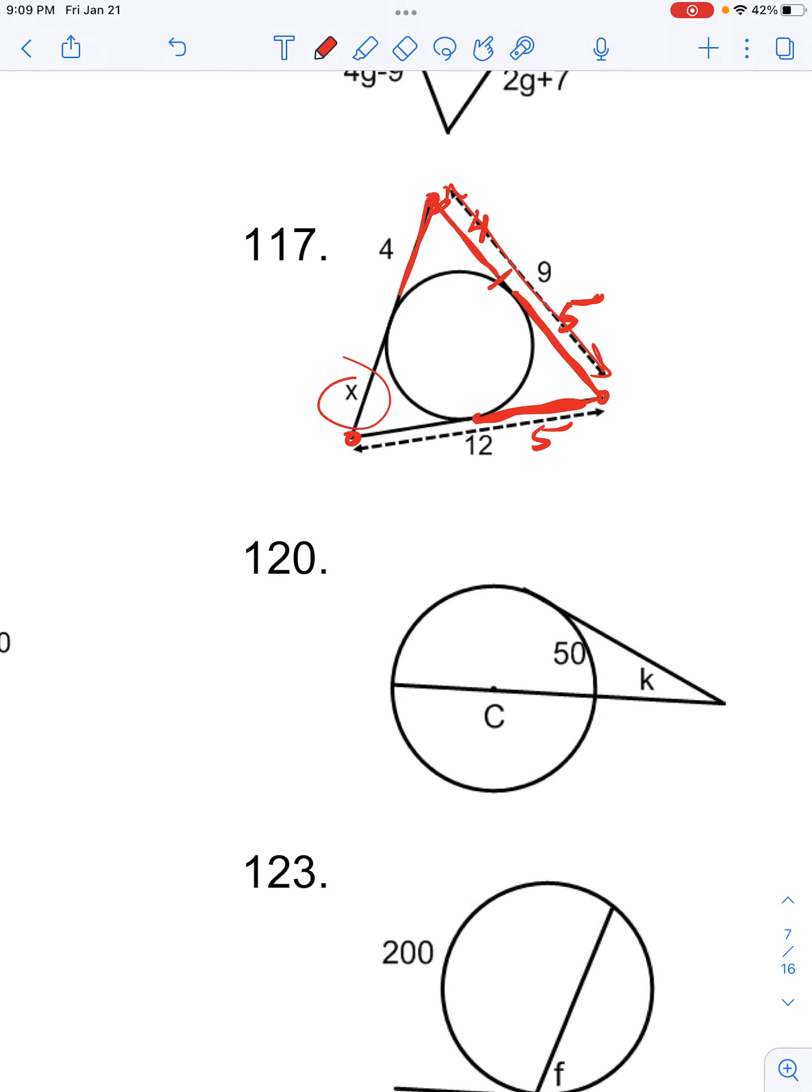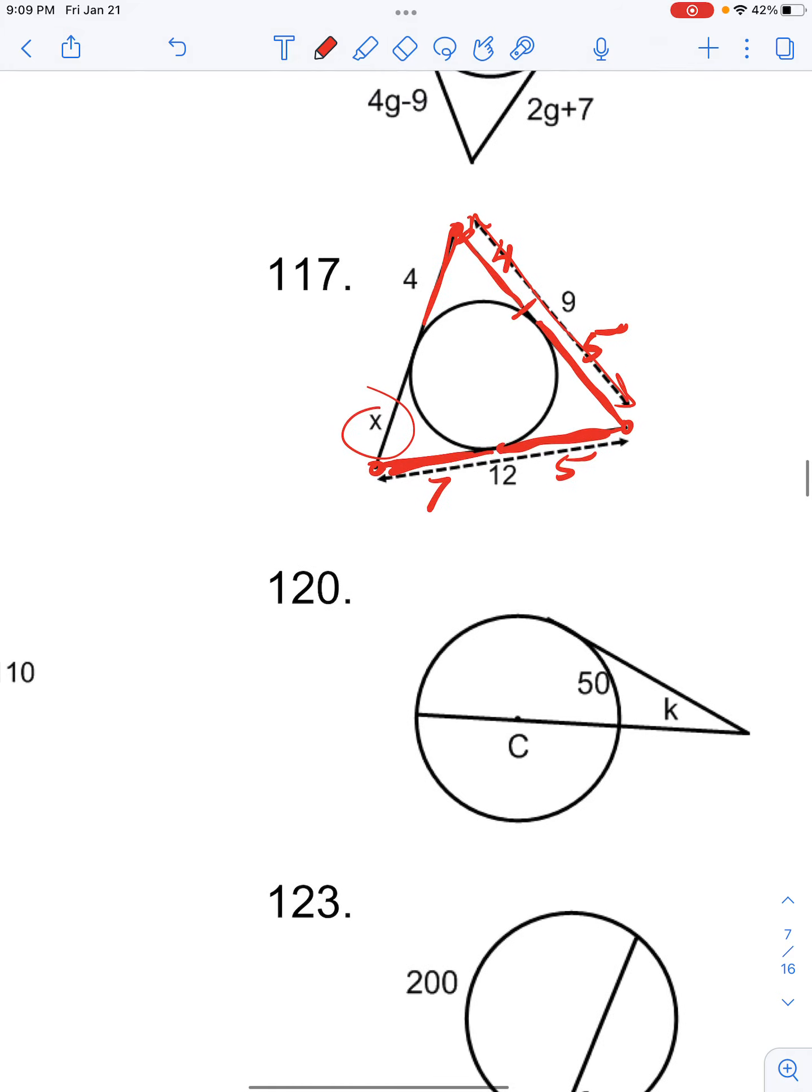So then subtracting the difference from 12 here to get the remaining length over here, that would be 12 minus 5, which would be 7. And since these two tangent lines must be congruent, then x must equal 7.